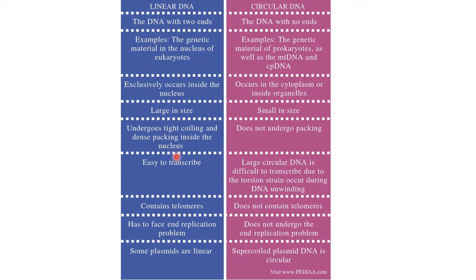Linear DNA is easy to transcribe. Large circular DNA is difficult to transcribe due to torsion strains that occur during DNA unwinding.